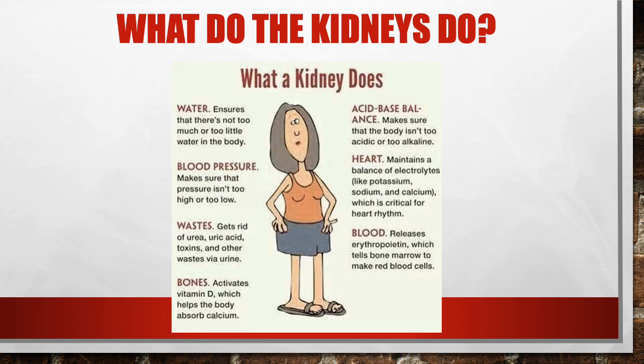The renin-angiotensin-aldosterone system, or RAS, is how the kidneys help regulate blood pressure. They secrete hormones that create a cascade reaction in the body, helping you hold on to more fluid and more sodium, which in turn increases your blood pressure overall.